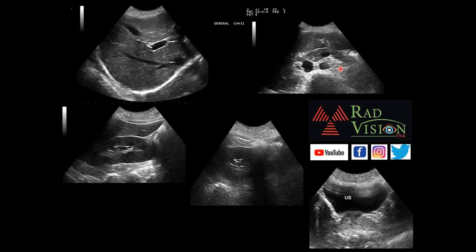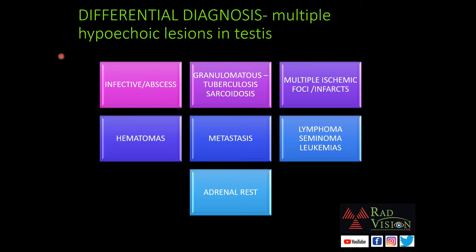Based upon these features, the differential diagnoses considered for the multiple hypoechoic lesions in the testis include: infective etiology or abscesses; granulomatous etiology, either tuberculosis or sarcoidosis; multiple ischemic infarcts; hematomas; metastasis; lymphoma; seminoma; leukemia; and adrenal rest tumors — all of which can present as multiple hypoechoic areas scattered in testicular parenchyma.